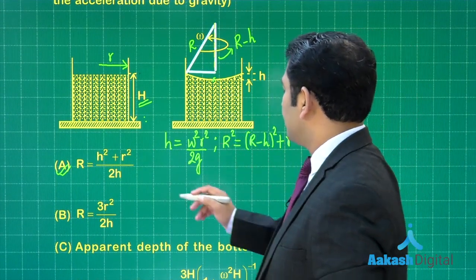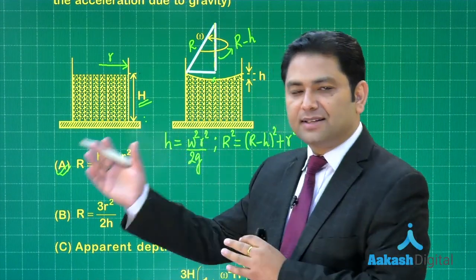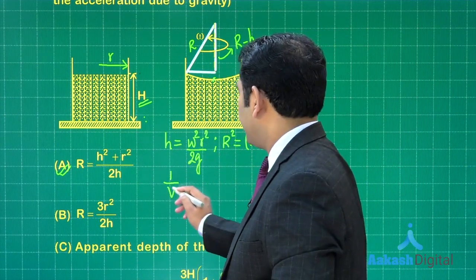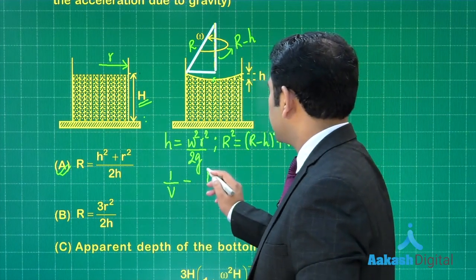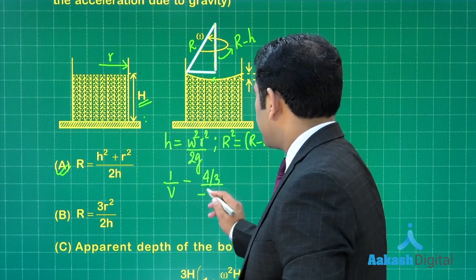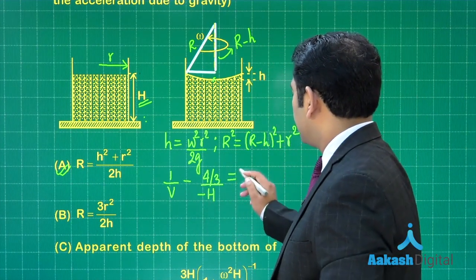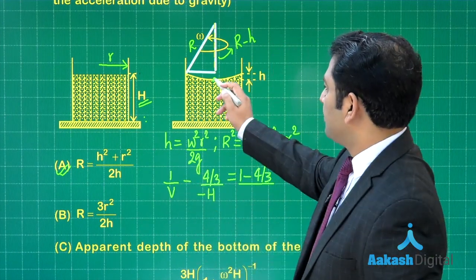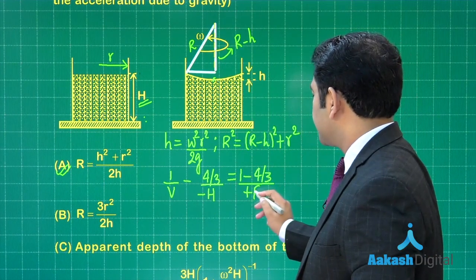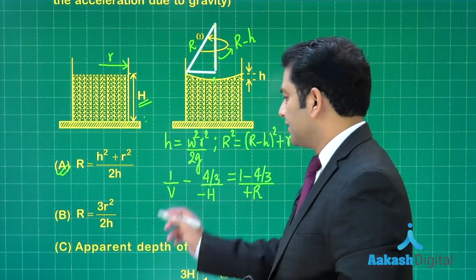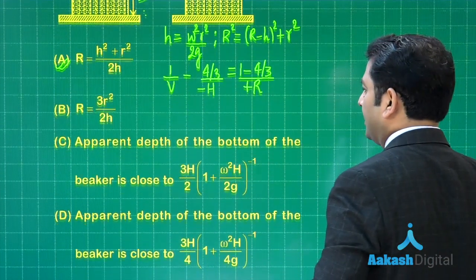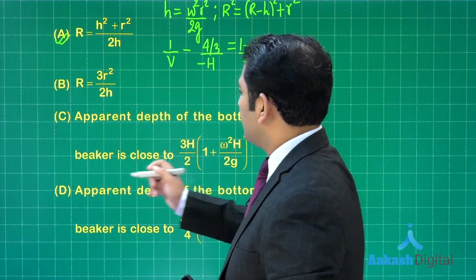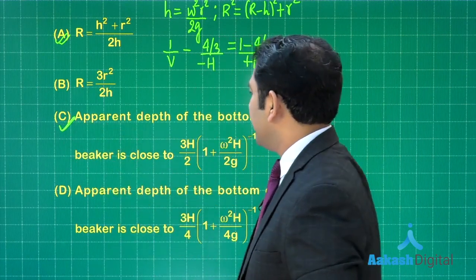Refraction at curved surface would be involved. The formula is μ₂/v minus μ₁/u equals (μ₂ minus μ₁)/R. So μ₂ is 1/v minus μ₁, which is 4/3, and the object distance will be negative H. Equals μ₂ minus μ₁ divided by the radius with the sign. From the pole upward you go, that is along the direction of incident ray, that is plus R. So this v will itself be the apparent depth. Put the value of capital R and you are certainly going to get option number C as the apparent depth.